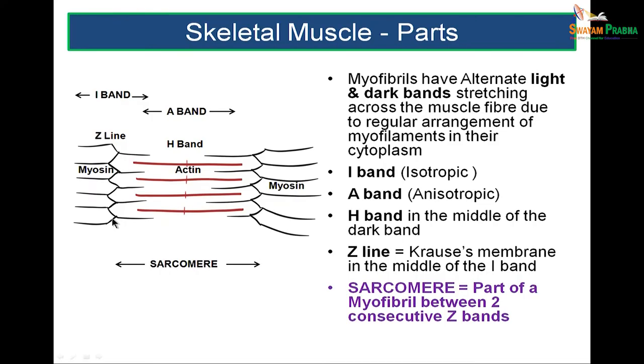The actin and myosin filaments slightly overlap each other. During contraction they overlap more; during relaxation they return to their original state. In this manner, a muscle can contract and shorten or relax and lengthen. The successive part between two consecutive Z lines is called a sarcomere. The sarcomere is the structural unit of a muscle fiber, defined as the part of a myofibril between two consecutive Z bands.